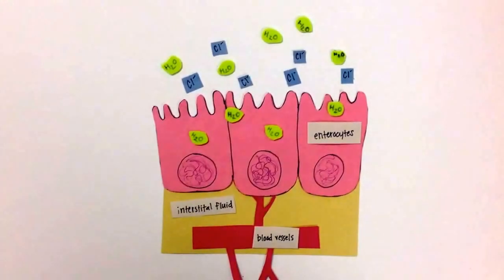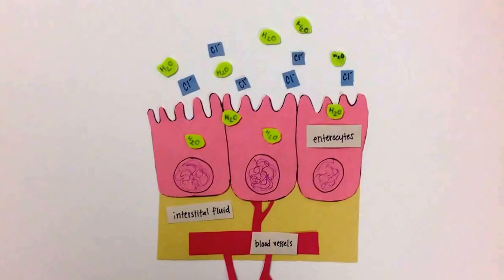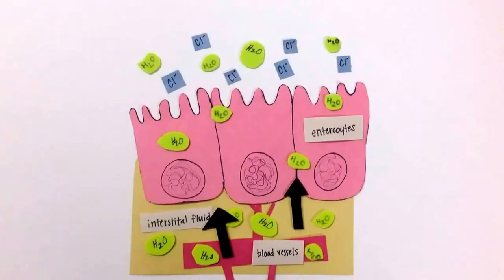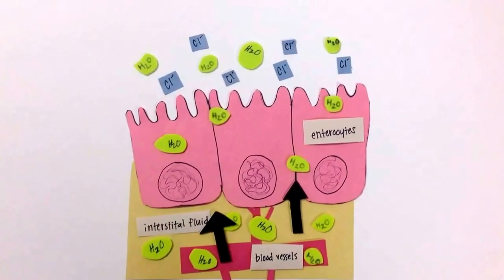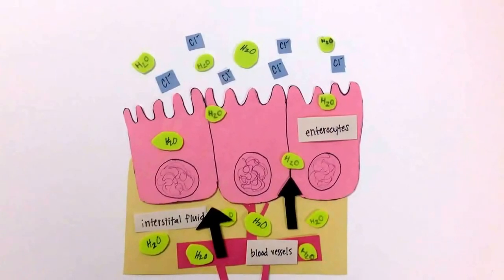Loss of water in the cells causes water from interstitial fluid to leave. Water from interstitial fluid is replaced by water from the blood. Water is constantly moving down its concentration gradient. Cholera leads to severe dehydration due to loss of control of the chloride pump.